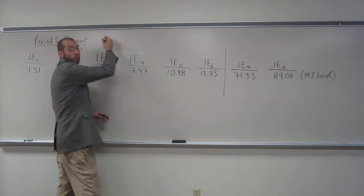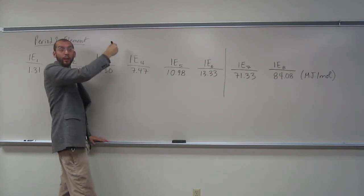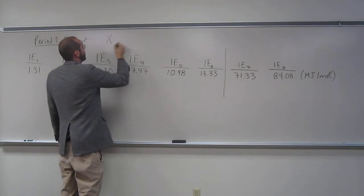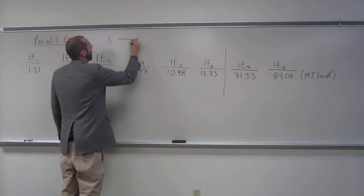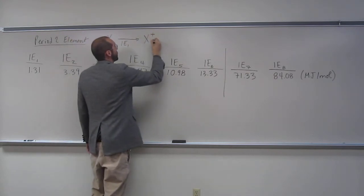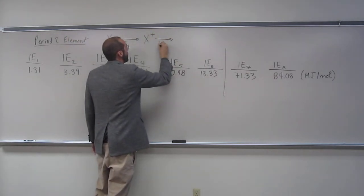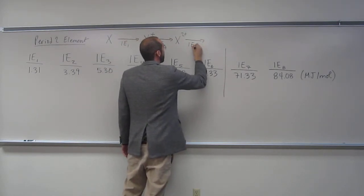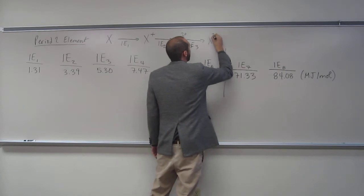So let's just draw the ionization energies using x as a placeholder. Okay? So first ionization energy, we're going to get x plus, right? Second ionization energy, x2 plus. Third ionization energy, x3 plus.